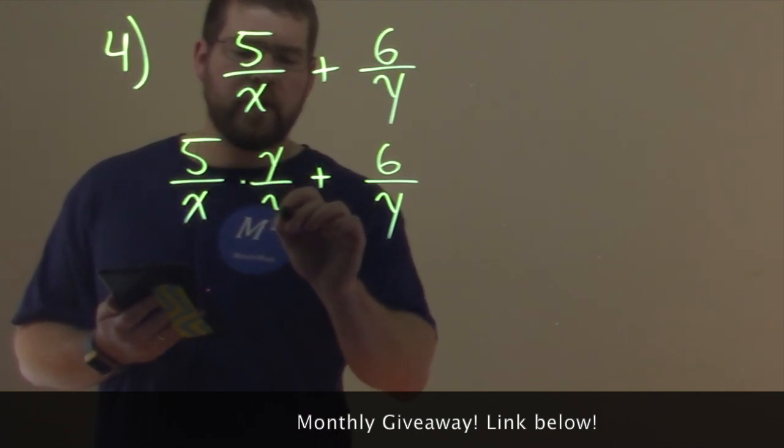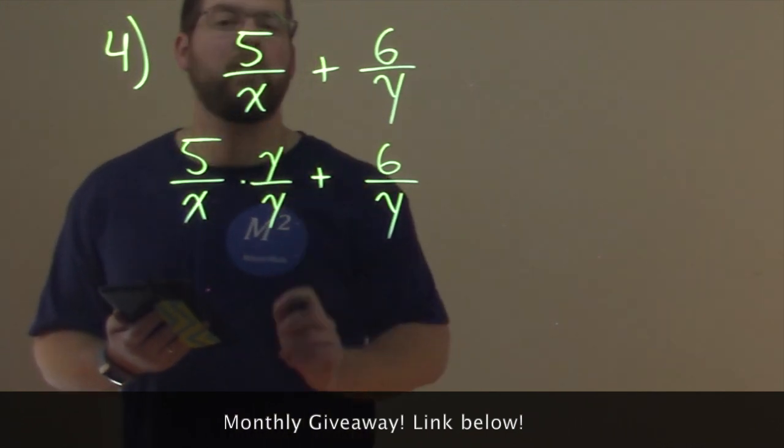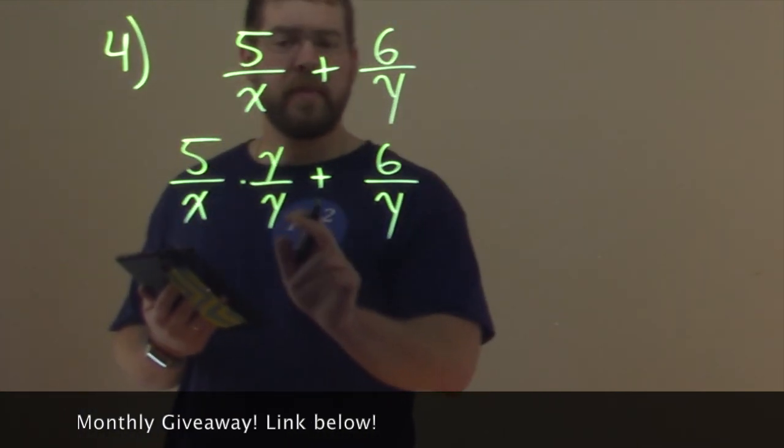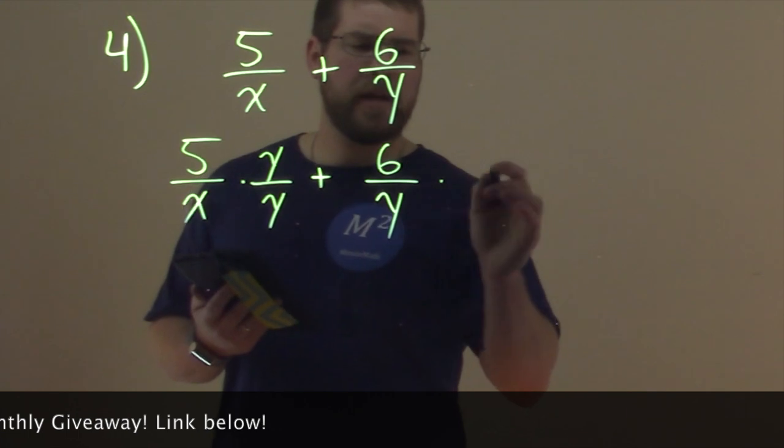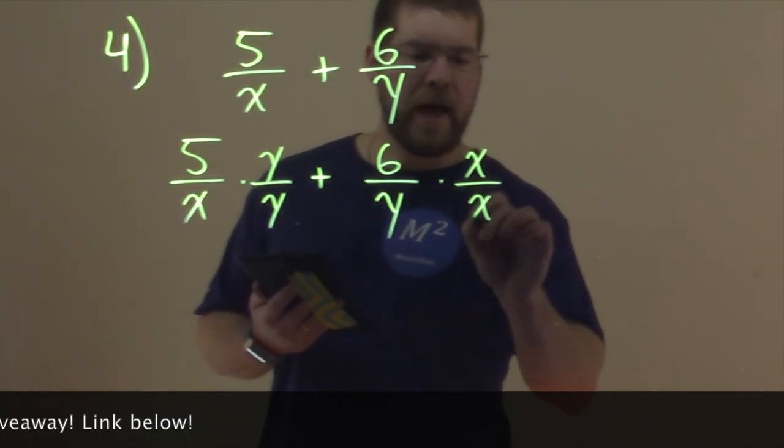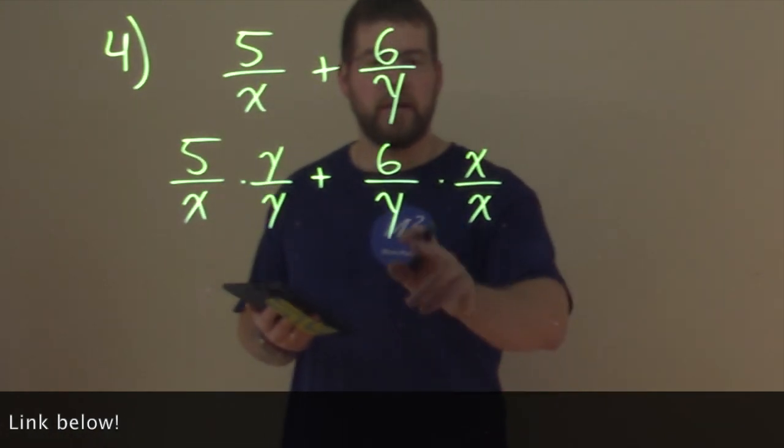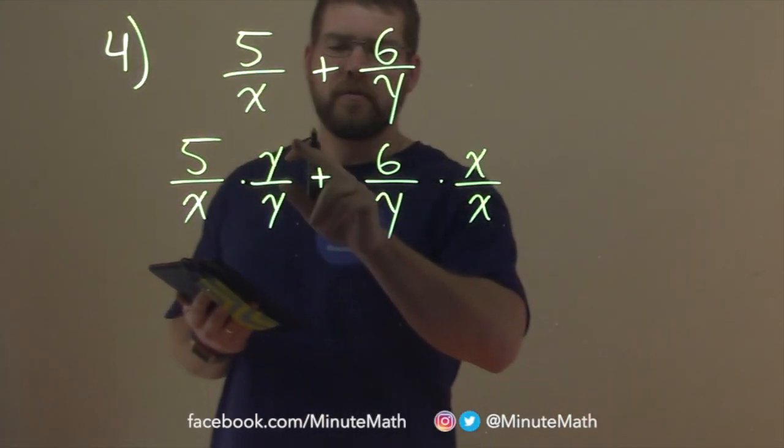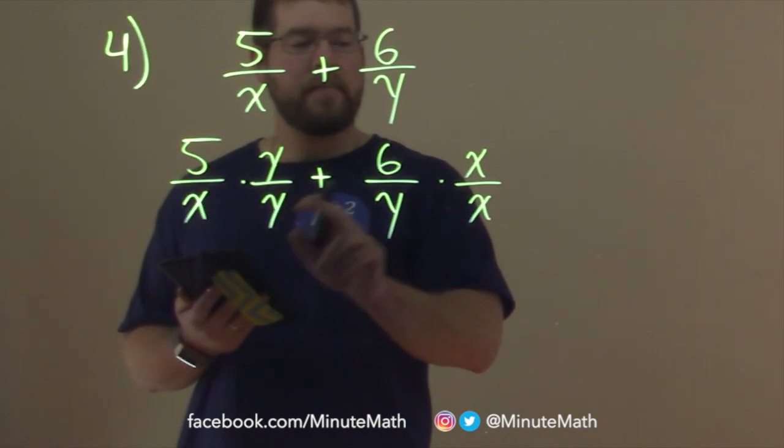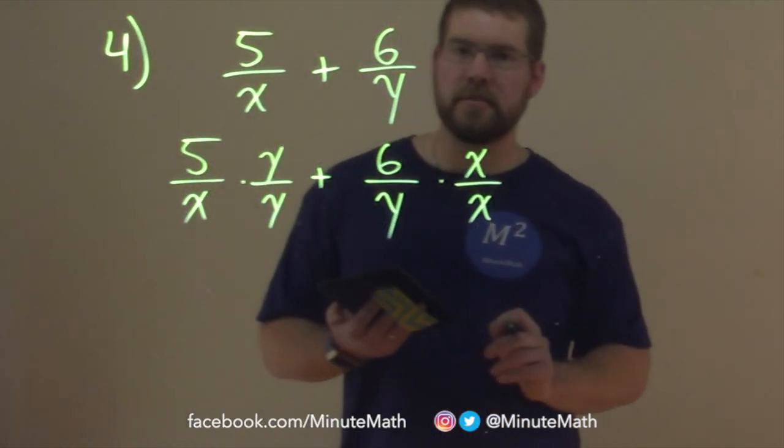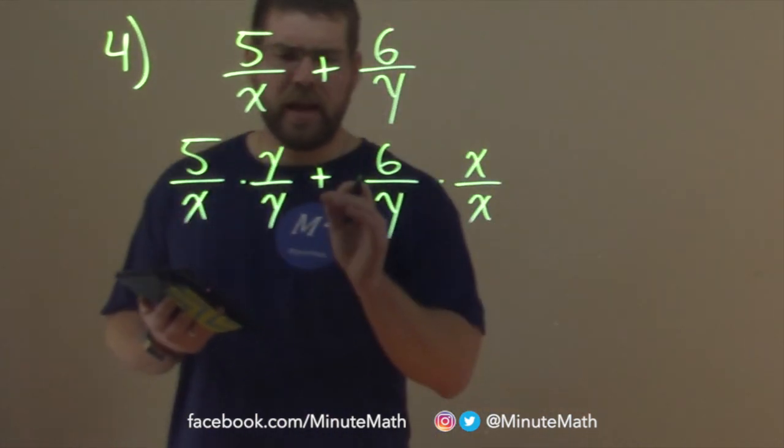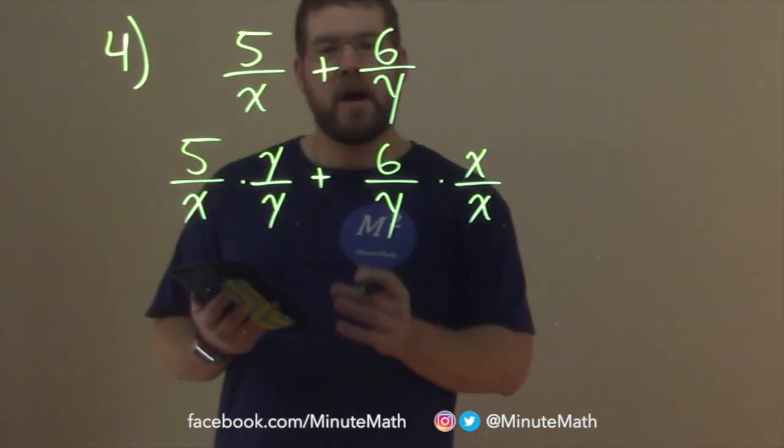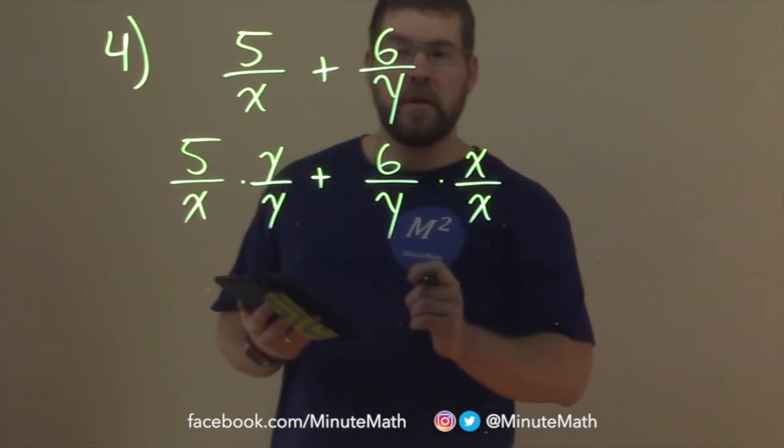If I multiply the first one by y over y, what happens? The denominator becomes xy, and the numerator becomes 5y. This side here, I multiply by x over x. Same thing happens. We have y times x or xy, and then 6 times x. Notice, y divided by y is 1, and x divided by x is 1 as well. And that allows us to adapt this expression so we have a common denominator, and that's really the goal here.